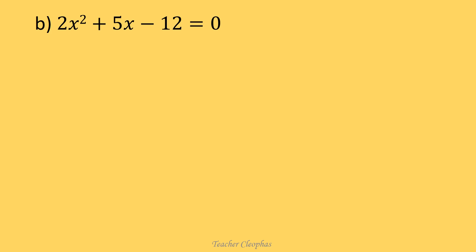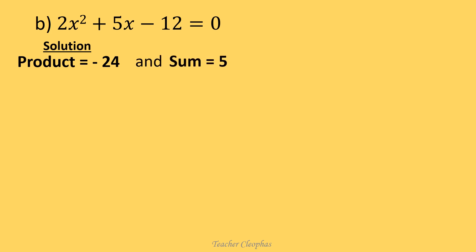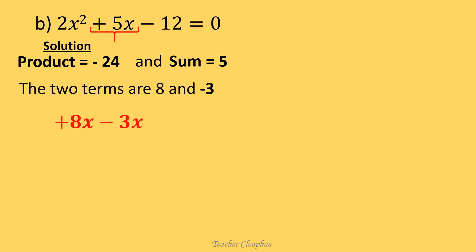Question b: 2x squared plus 5x minus 12 equals to zero. We look for two terms whose product is negative 24 and sum is positive 5. Pause the video and try to look for the numbers. The two terms are 8 and negative 3. So we substitute for positive 5x with positive 8x minus 3x. Then we complete our equation by writing 2x squared plus 8x minus 3x minus 12 equals to zero.